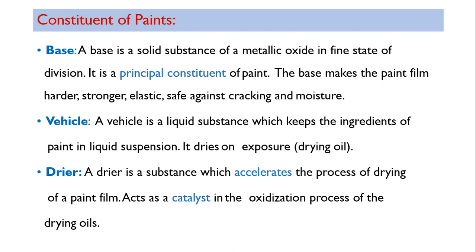The base is a solid substance of a metallic oxide in fine state of division. It is the principal constituent of paint. The base makes the paint film harder, stronger, and elastic, protecting against cracking and moisture. So base provides hardness, strength, and elasticity to the paint.